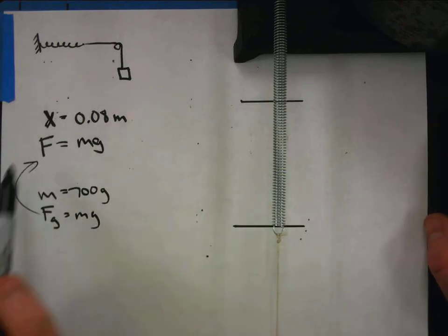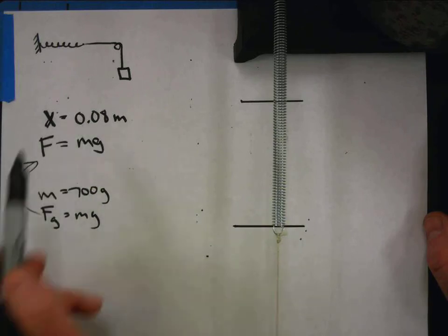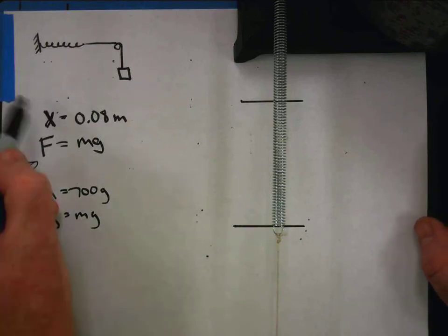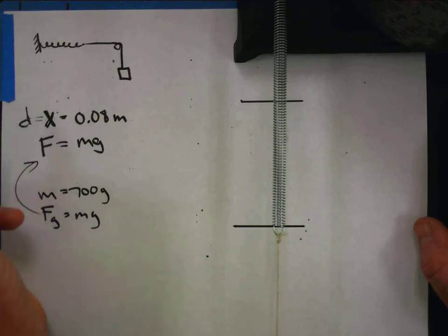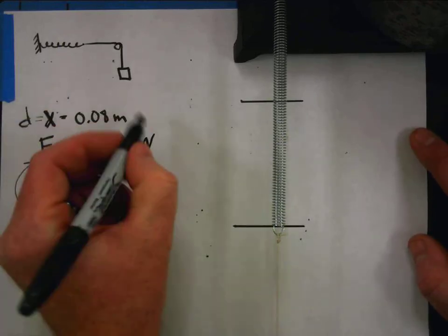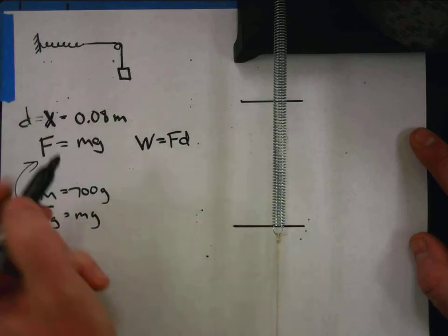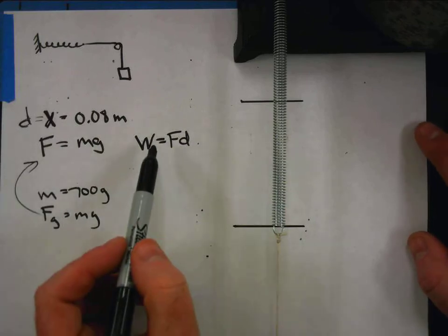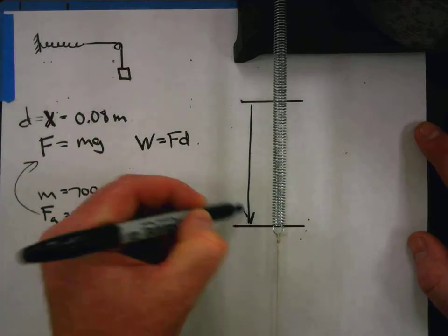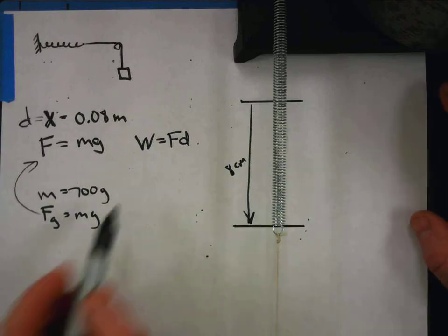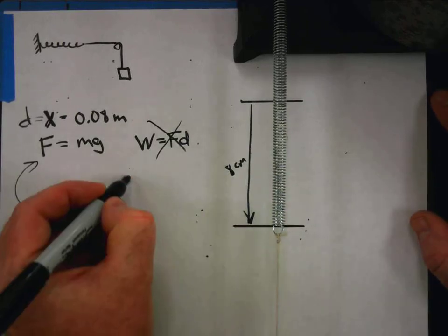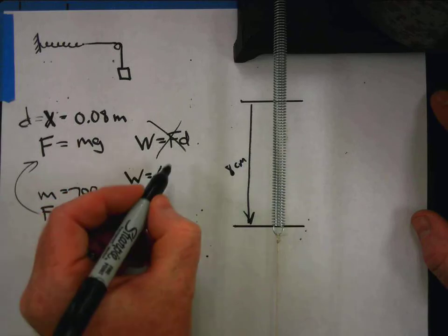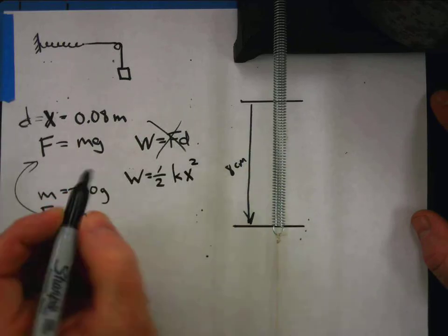If I know the displacement and I know the force, can I find the work done? Not directly — because this force, mg, is not the force that was applied across the whole 8 centimeters. It's a variable force, so simply multiplying F × d won't work. What I have to do is recognize that this variable force is related to the spring constant k and the square of the distance traveled: W = ½kx².